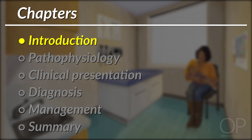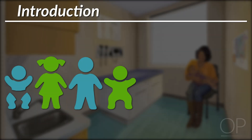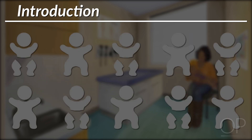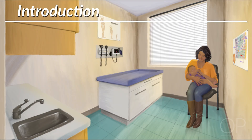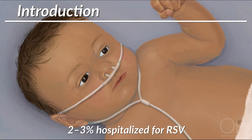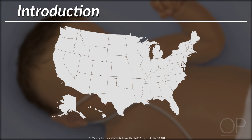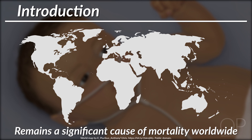Introduction. Bronchiolitis is a viral lower respiratory tract infection affecting infants and young children, particularly in the winter months. It is a remarkably common infection in children less than 2 years old, with up to 20% of each year's birth cohort seeking medical attention for symptoms related to respiratory syncytial virus, also known as RSV. While most children are managed as outpatients, between 2-3% of all infants are hospitalized for RSV, at an annual national cost of greater than $500 million. Though deaths related to bronchiolitis are rare in the U.S., RSV remains a significant cause of infant mortality worldwide.